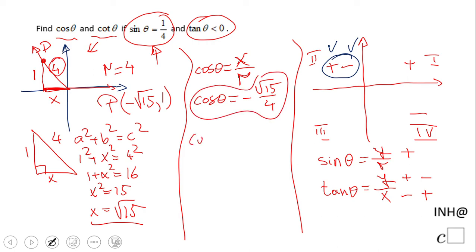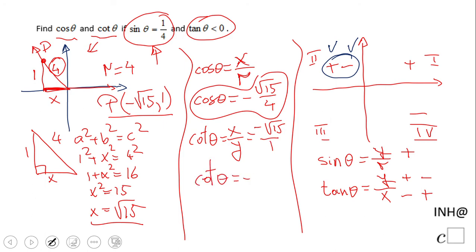We have one more to find: cotangent. Cotangent is defined as x over y. Looking back at point P, x is negative square root of 15 and y is 1, so cotangent equals negative square root of 15. That's it! If you enjoyed this video, don't forget to click like and come back to C-squared for more math.